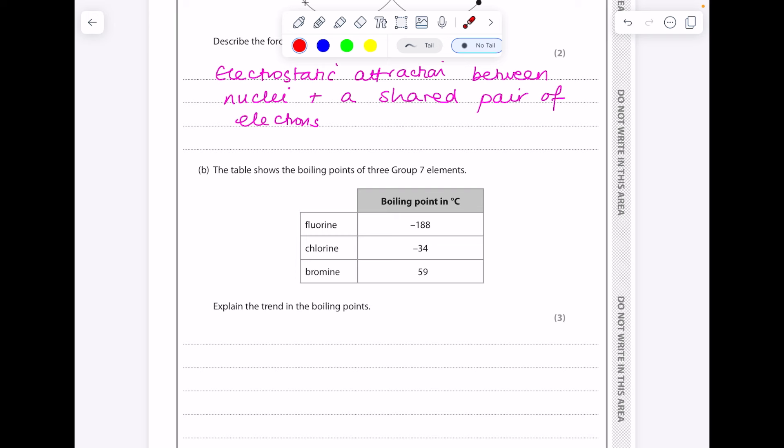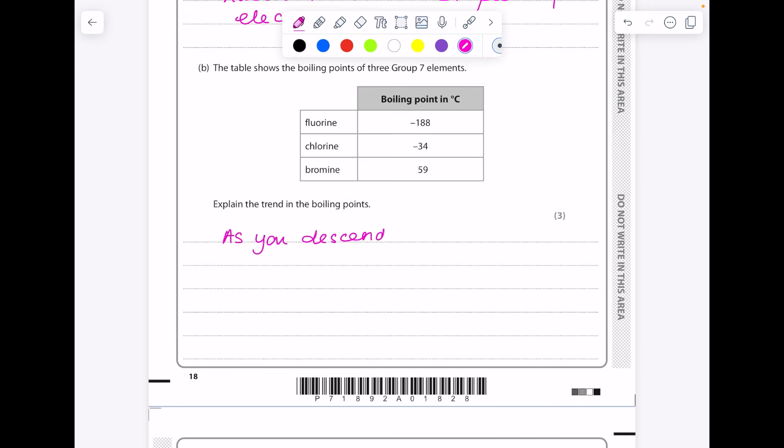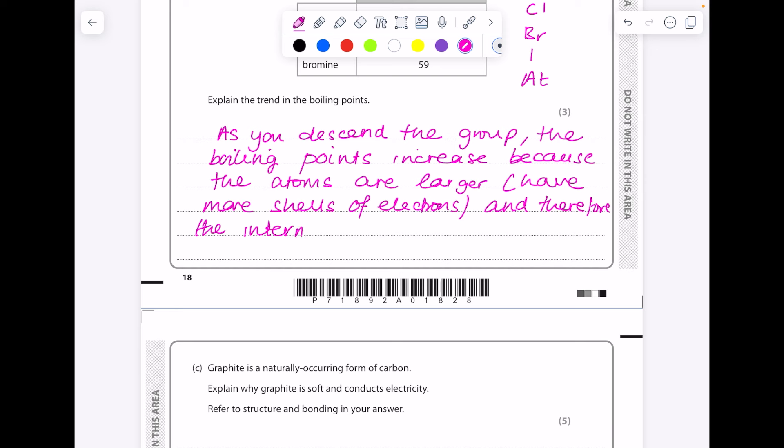The table shows the boiling points of Group 7 elements. Remember those are the halogens. Explain the trend in boiling points. Right, you can see as you descend the group the boiling point increases. Why is that? It's because the atoms have more shells, therefore they're larger, meaning that the intermolecular forces between them are stronger. So first of all state the trend. Always keep an eye on that periodic table so you're happy with why I'm saying as you descend the group, because it goes fluorine, chlorine, bromine, iodine, and astatine. So as you descend the group the boiling points increase. Why is that? So the intermolecular forces are stronger and require more energy to break.